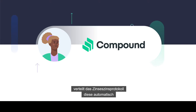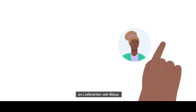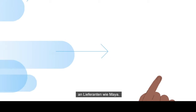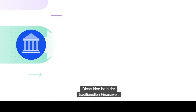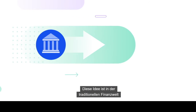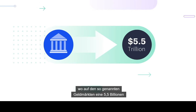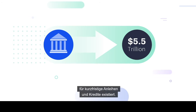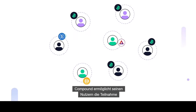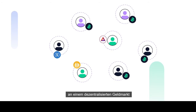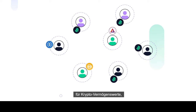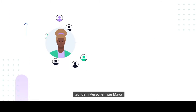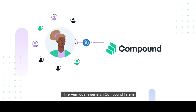When borrowers in a specific market accrue interest, the Compound protocol automatically distributes it to suppliers like Maya. This idea is already well established in the traditional finance world, where a 5.5 trillion dollar short-term borrowing and lending industry exists in what are called money markets. Compound allows its users to participate in a decentralized money market for crypto assets.